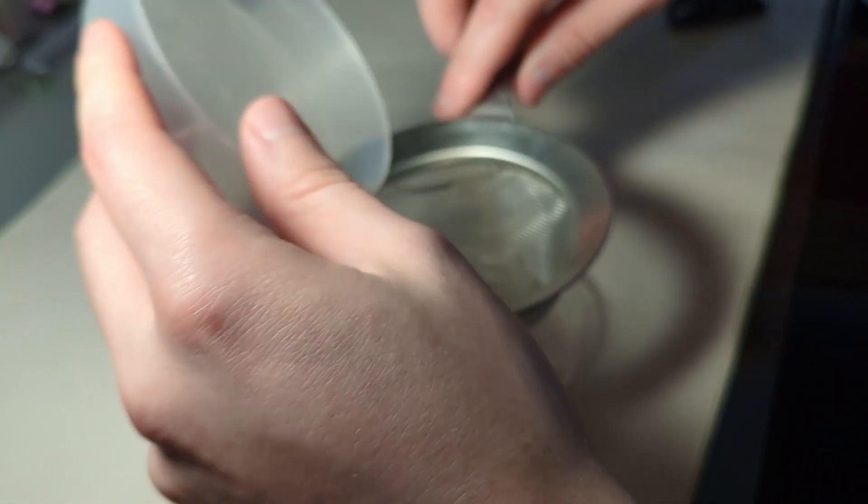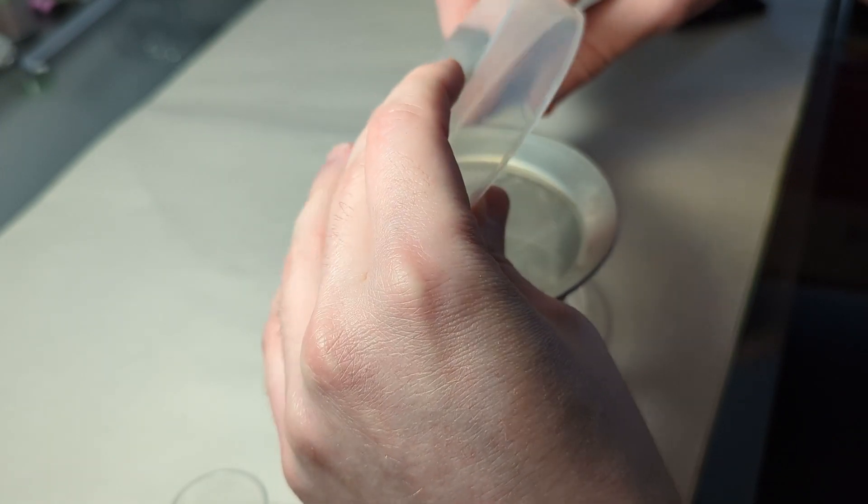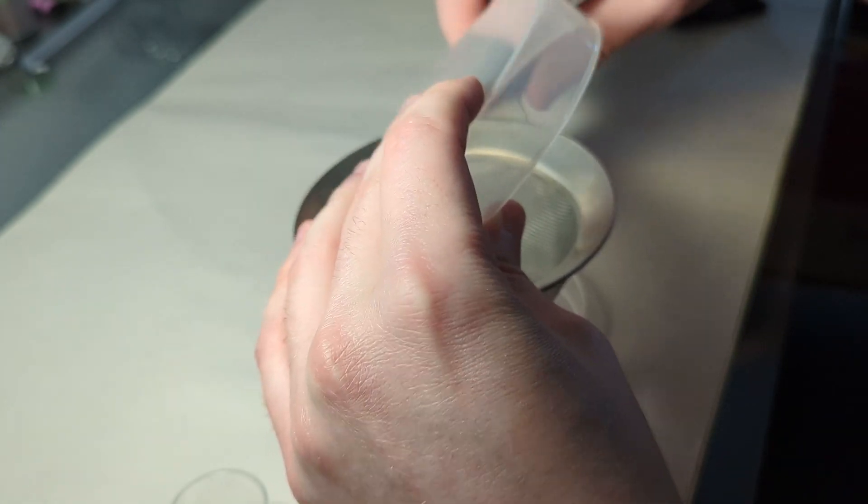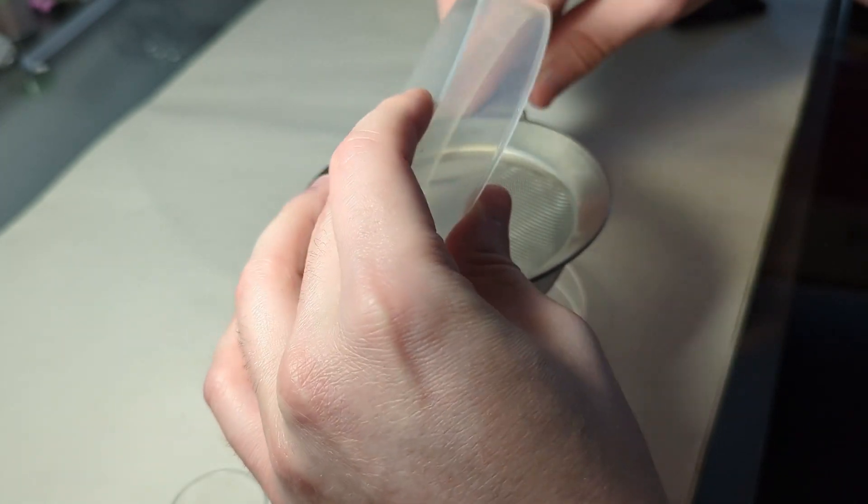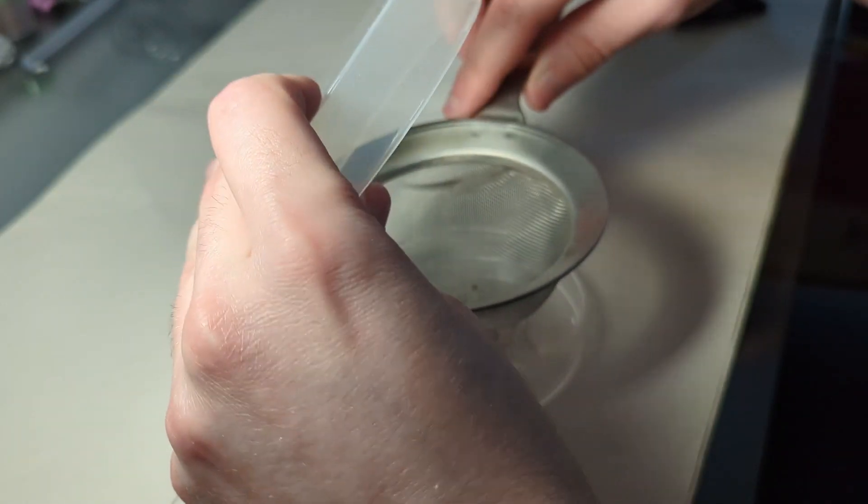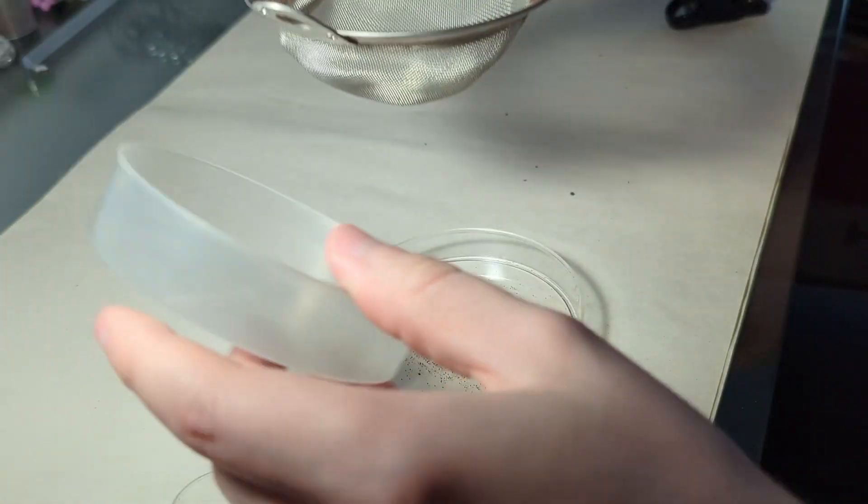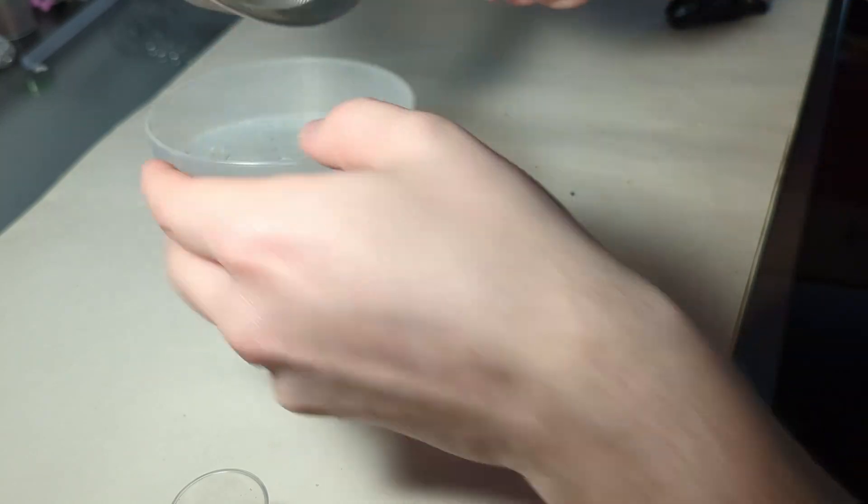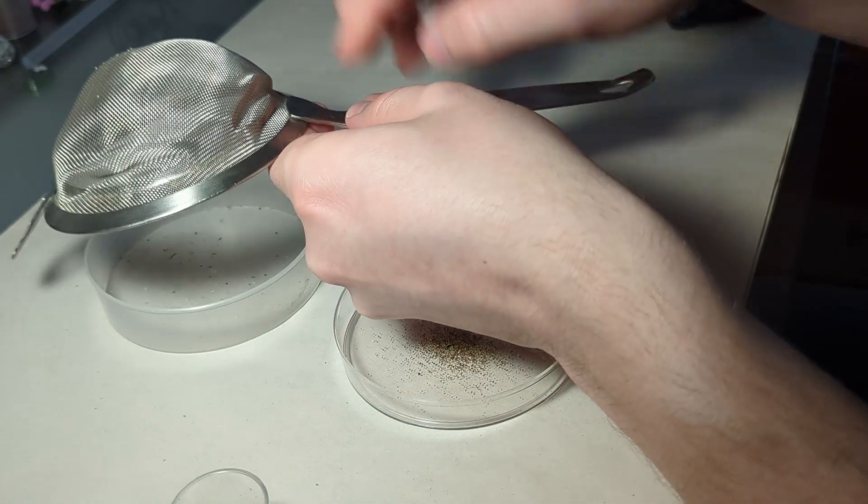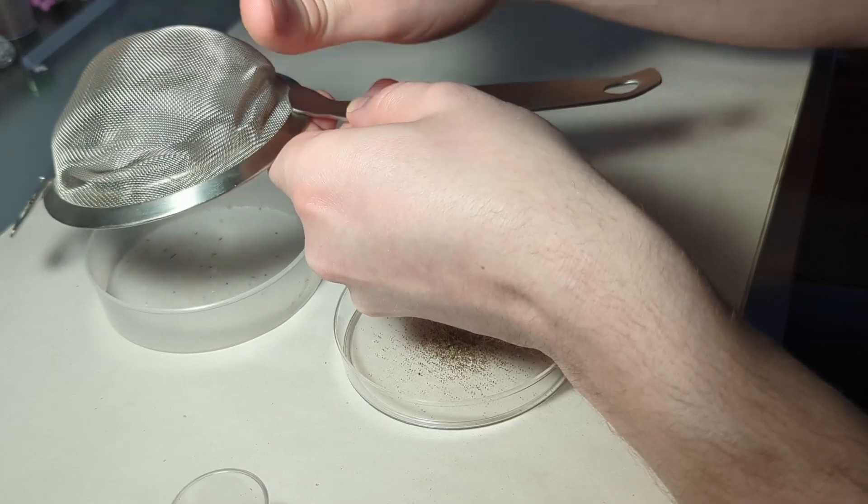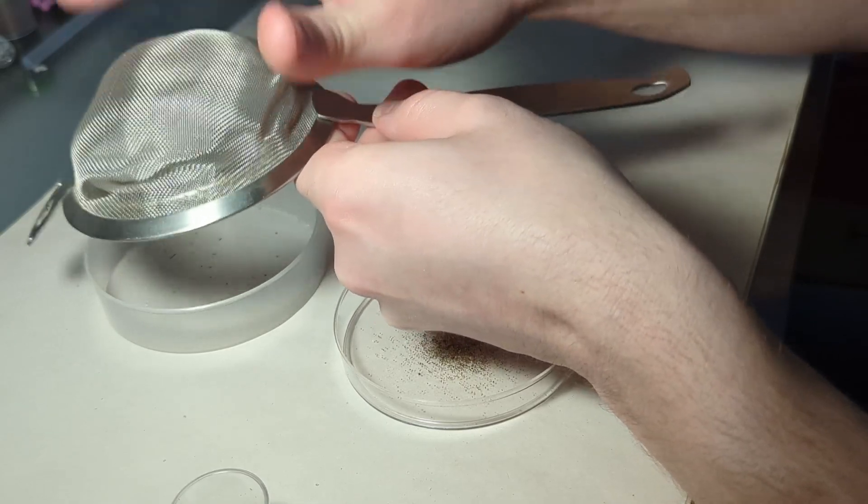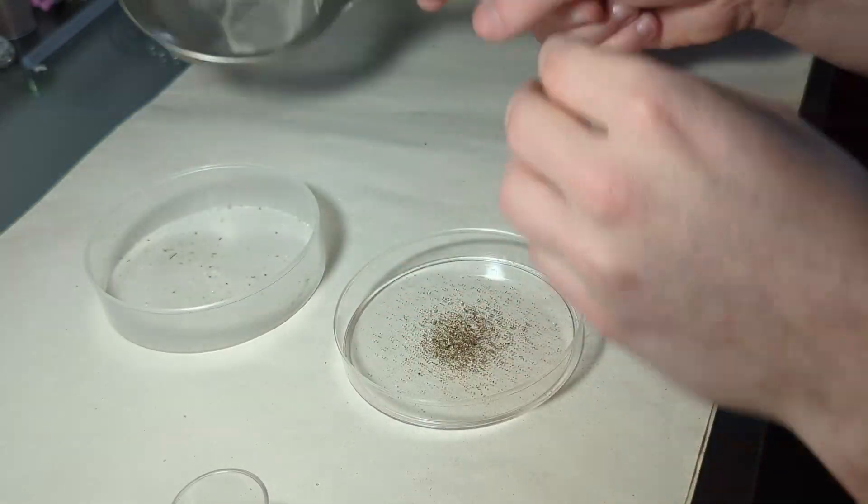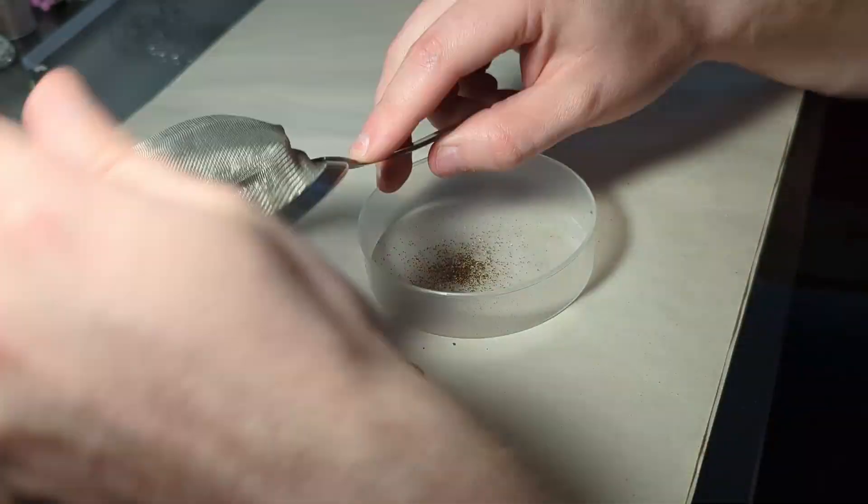So do this a couple more times and then go on to the next thing, which is basically using the colander again. But you don't really want to shake too hard because these sand particles do fall through if you shake it a lot. But if you don't shake it very much, then you will get a lot of the sand out. You can also repeat this process a couple times until you get a sufficient amount of sand out to be happy.